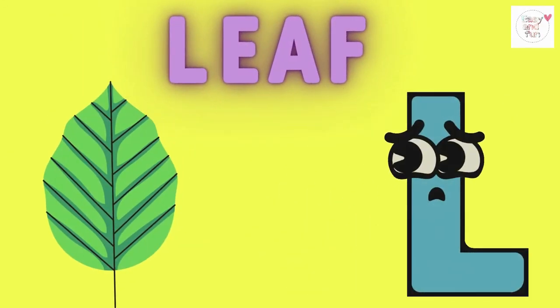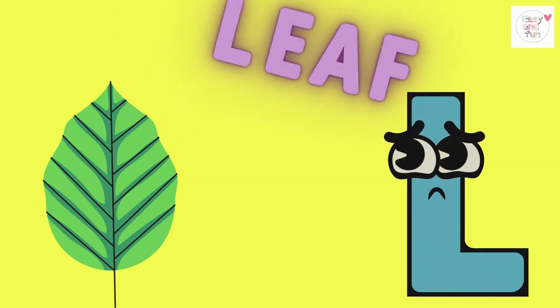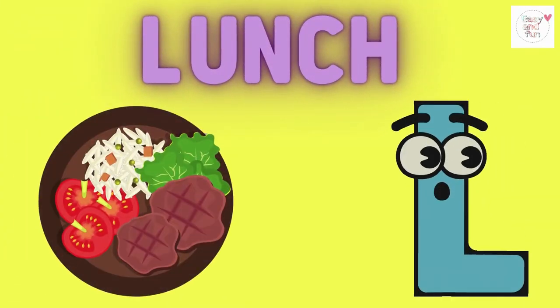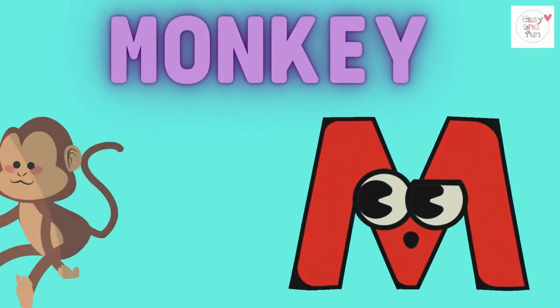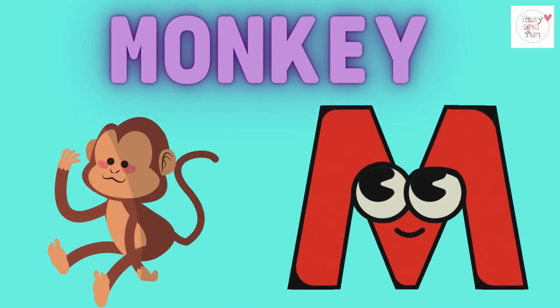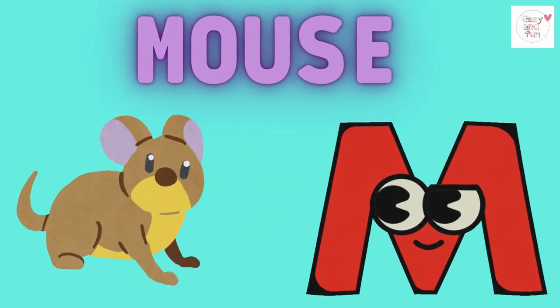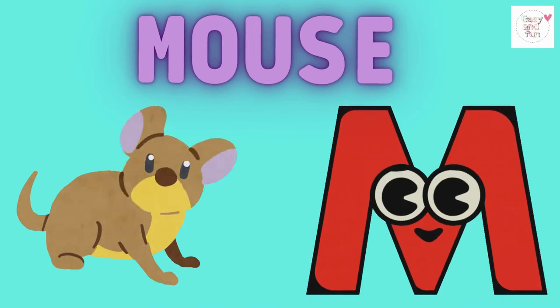L is for leaf, l-l-leaf. L is for lunch, l-l-lunch. M is for monkey, m-m-m-monkey. M is for mouse, m-m-m-mouse.